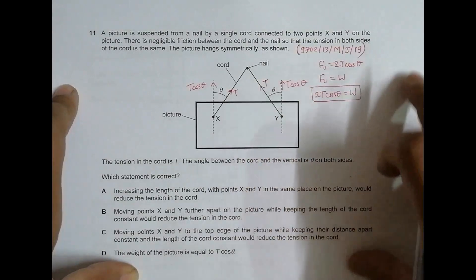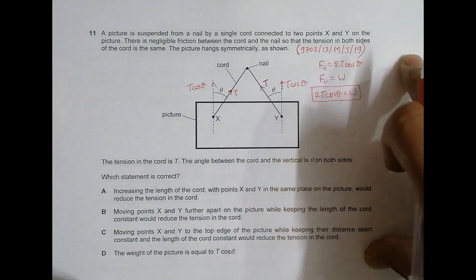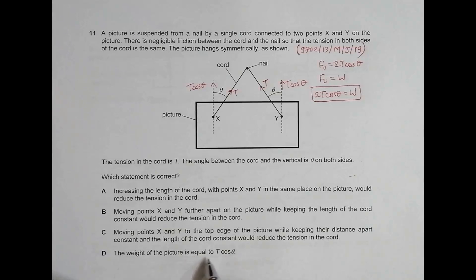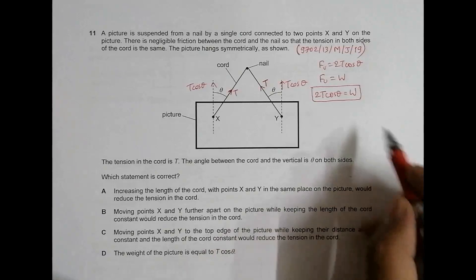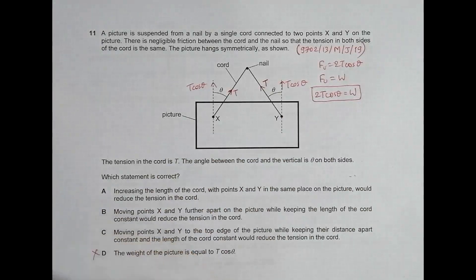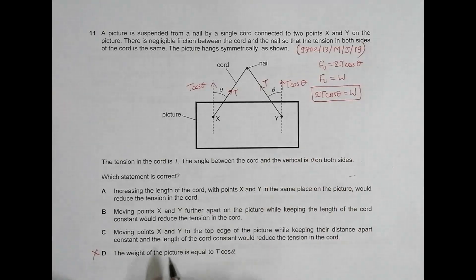Looking at the last choice first: it states the weight of the picture equals T cosθ. However, we derived that weight equals 2T cosθ, so this choice is incorrect and is immediately disqualified.